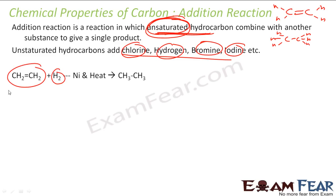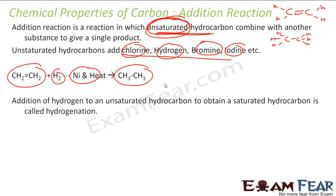For example, you have ethene; you add hydrogen in the presence of nickel and heat, and you get ethane. In this example of addition reaction, you have ethene, you add hydrogen in presence of nickel and heat, and you get ethane.